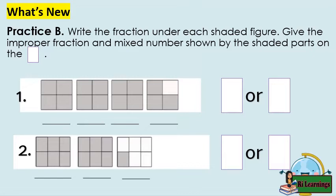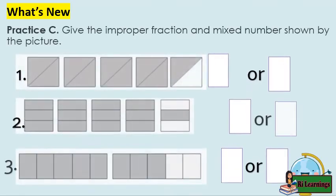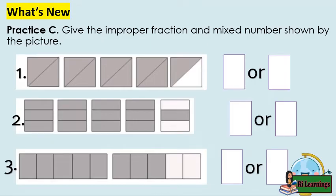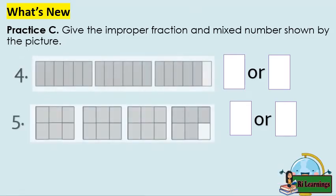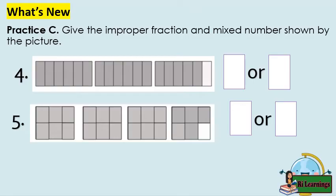Practice B: write the fraction under each shaded figure. Give the improper fraction and mixed number shown by the shaded parts on the box. Practice C: give the improper fraction and mixed number shown by the picture.